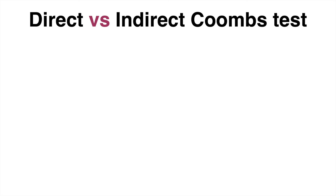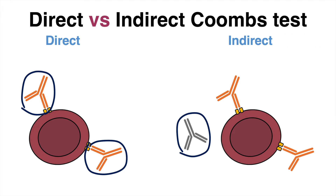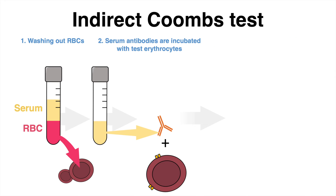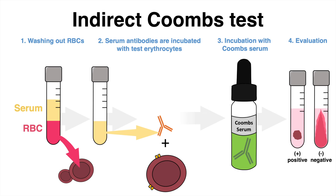Whereas the direct Coombs test detects antibodies sticking to red blood cells, the indirect Coombs test focuses on free-floating antibodies within the patient's serum, which may potentially bind to erythrocytes in case of a transfusion. After the erythrocytes have been washed out, the remaining serum that only contains unbound antibodies is incubated with test erythrocytes. In case of a positive test result, the antibodies will bind antigens on the surface of red blood cells. In the next step, the Coombs serum is added, which causes agglutination in case of a positive result.